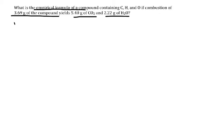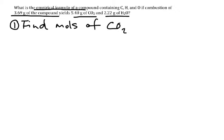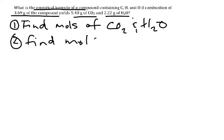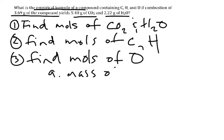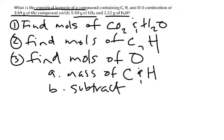As we talked about in class, first you want to find the moles of CO₂ and water. Then you want to find the moles of carbon and hydrogen. Then you want to find the moles of oxygen. In order to find the moles of oxygen, you have to find the mass of carbon and the mass of hydrogen. Once you have those masses, you subtract them from the total initial mass.